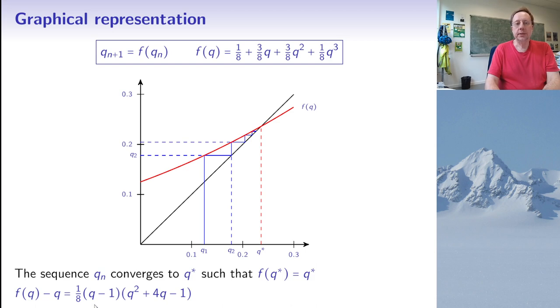And if I do this Euclidean division of F of Q minus Q by Q minus 1, what I get is 1 over 8 times a polynomial of degree 2. And for this polynomial of degree 2, I can find its roots, its zeros. So there are two zeros, but only one of them is positive as it should be. And that is square root of 5 minus 2, which is about 0.236. So with this graphical construction, I have shown that my sequence of Qn is an increasing sequence that will converge to this value Q star, which is about 0.236.